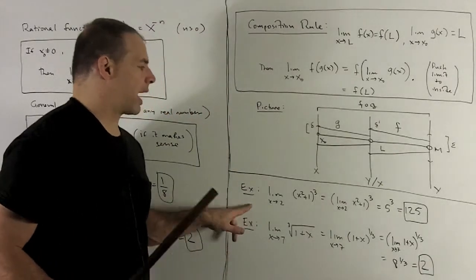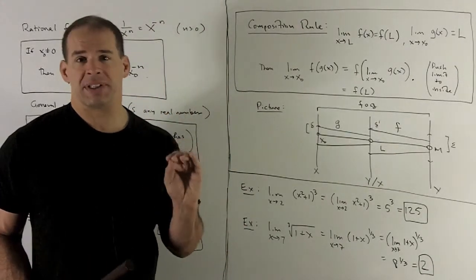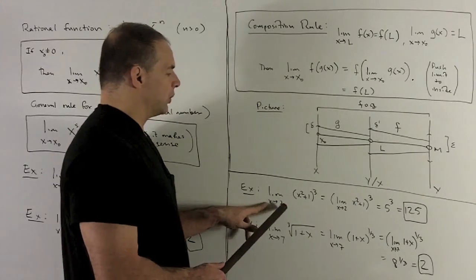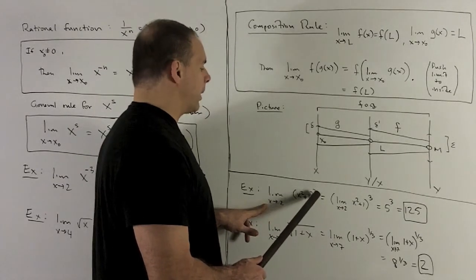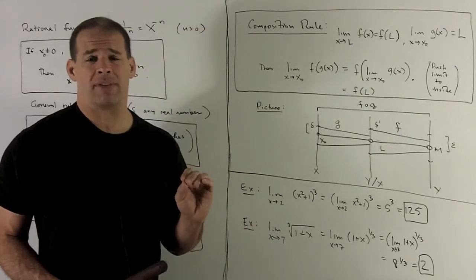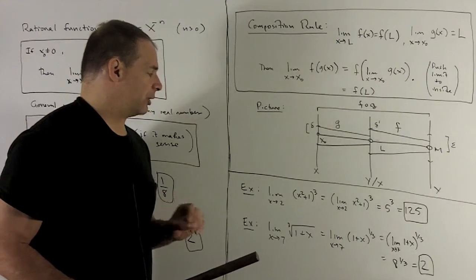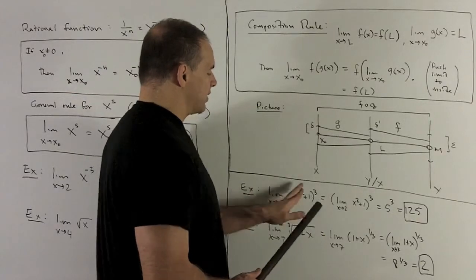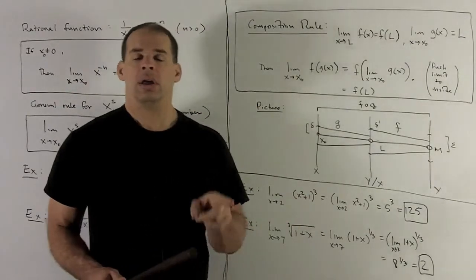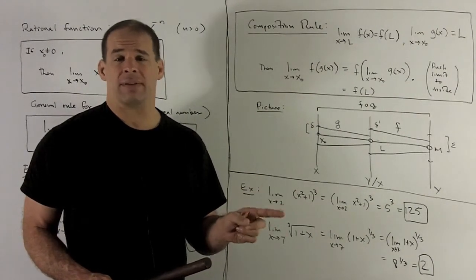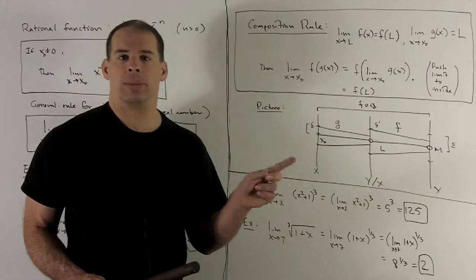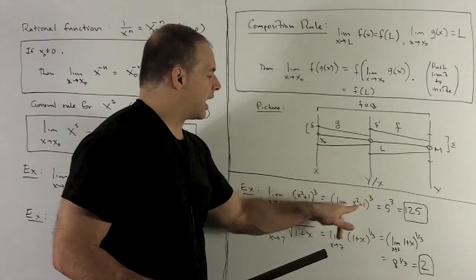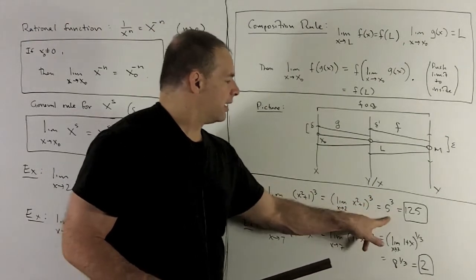Examples — how would you use this in practice? Take the limit as x goes to 2 of (x² + 1) raised to the third power. We know how to handle polynomials, so I push the limit to the inside: the cube is on the outside, and I evaluate (2² + 1) = 5, then cube it to get 125.